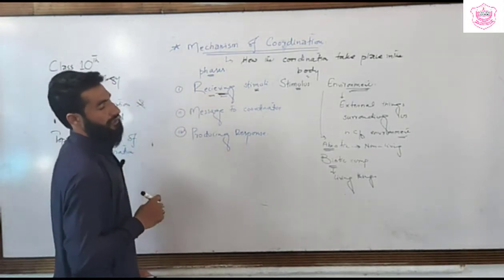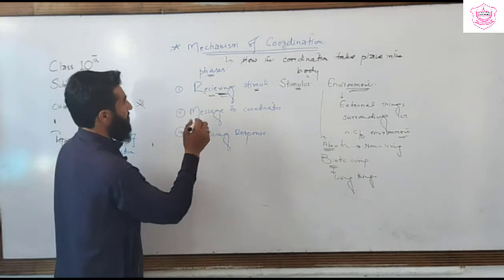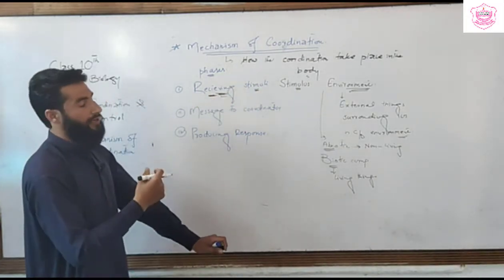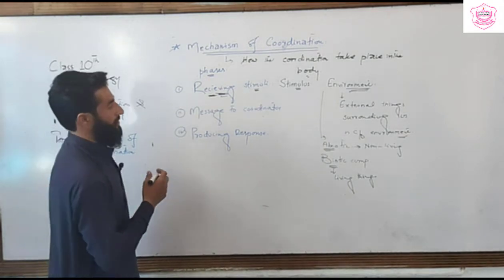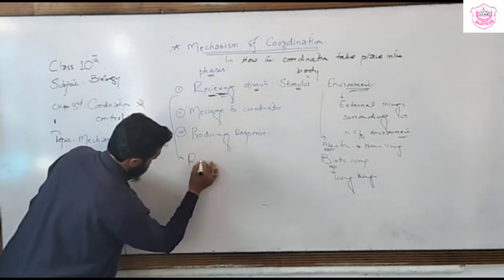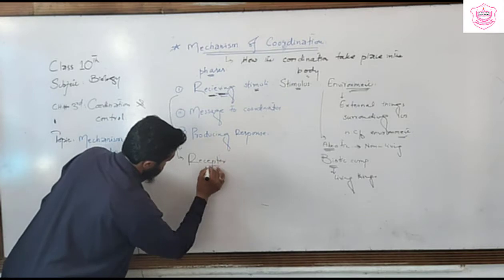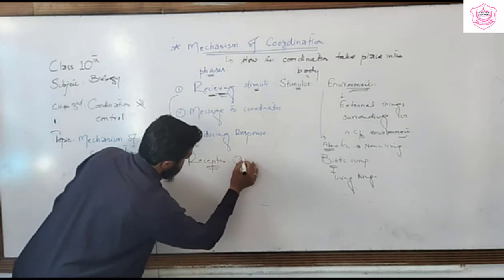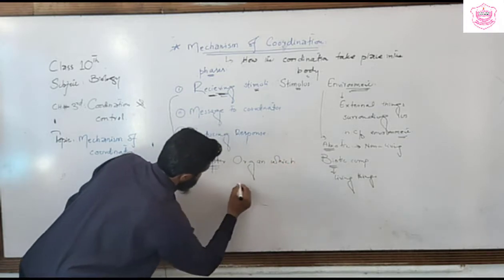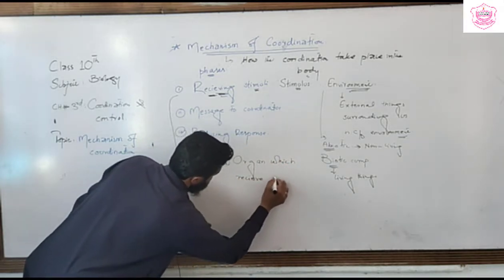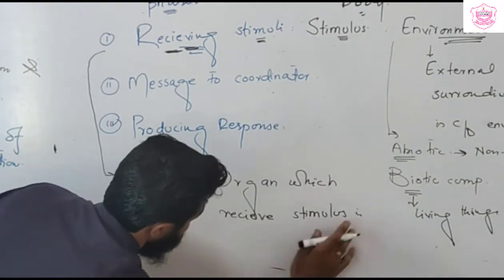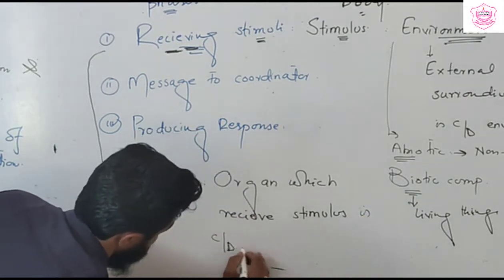So the first step is receiving stimuli. The organ which receives a stimulus is called a receptor.